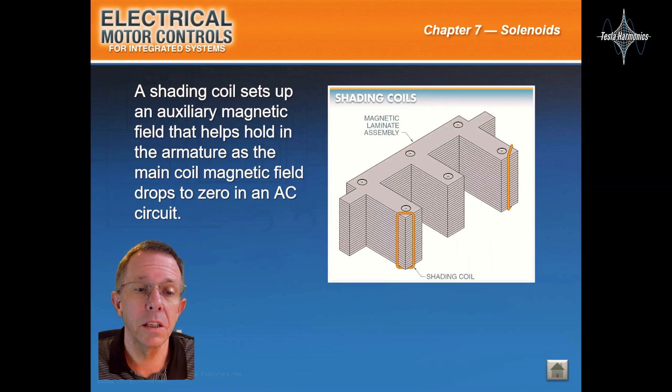A shading coil sets up an auxiliary magnetic field that helps hold in the armature as the main coil magnetic field drops to zero in an AC circuit.